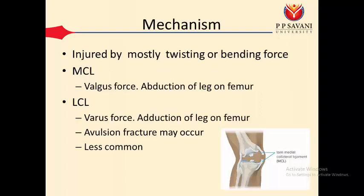There are mainly four ligaments located around the knee: the medial collateral ligament, lateral collateral ligament, anterior cruciate ligament, and the posterior cruciate ligament. These four ligaments are the foundation for knee joint stability.